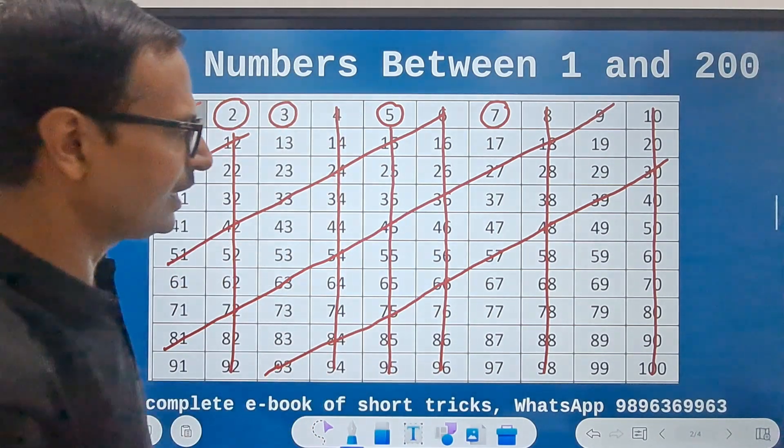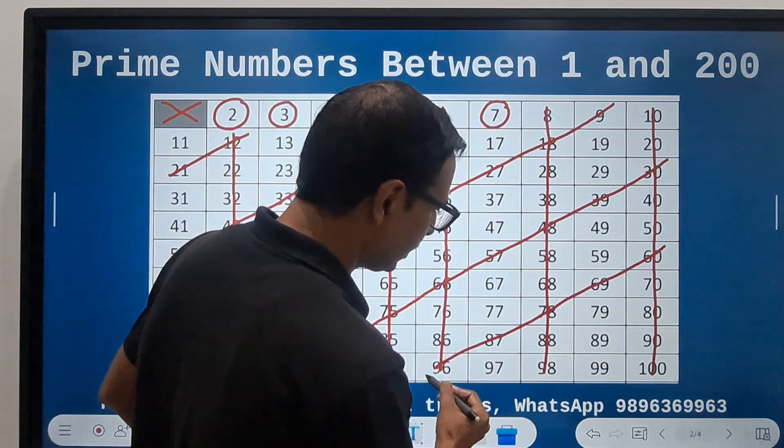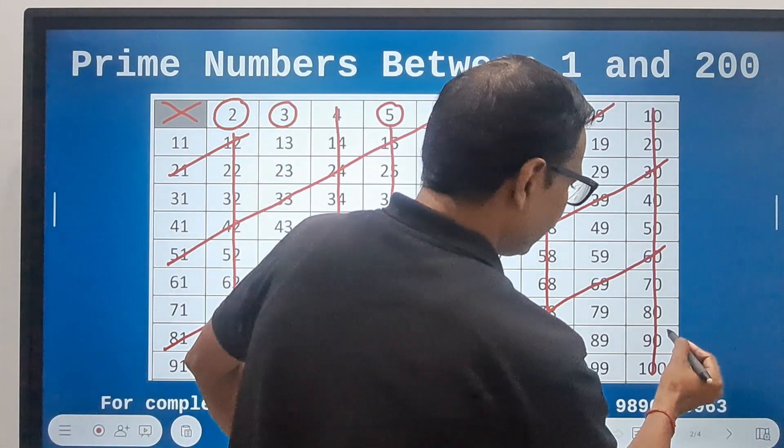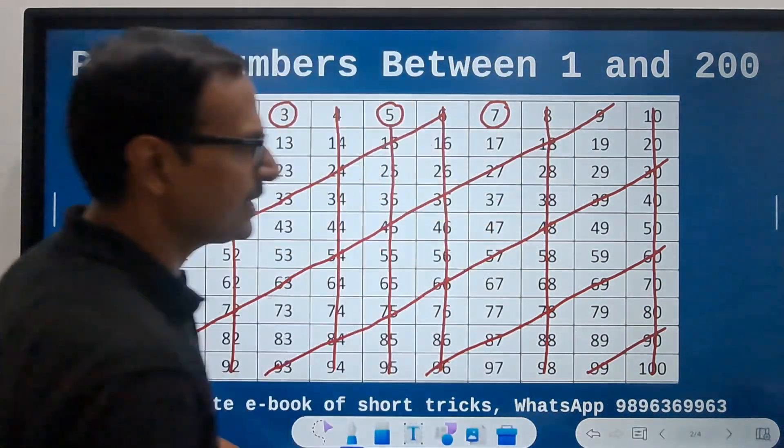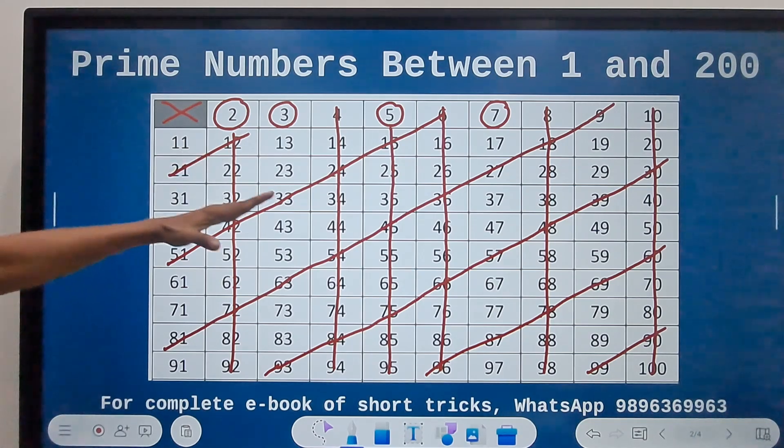And finally we have another diagonal here, 60, this is also ruled out. And finally we have the diagonal which contains 90. So you can see these are actually symmetrical.